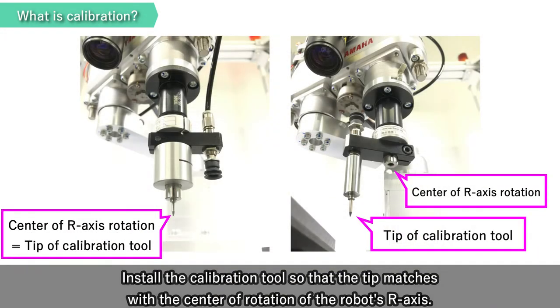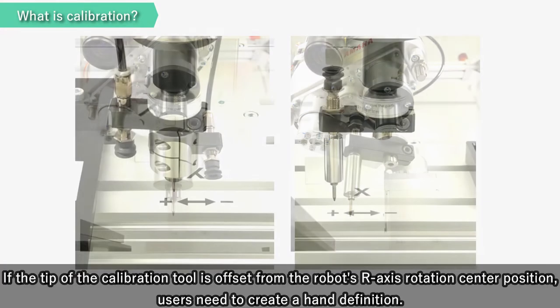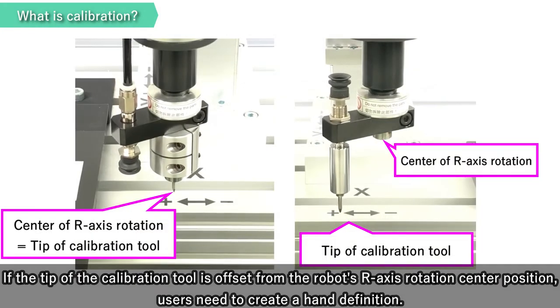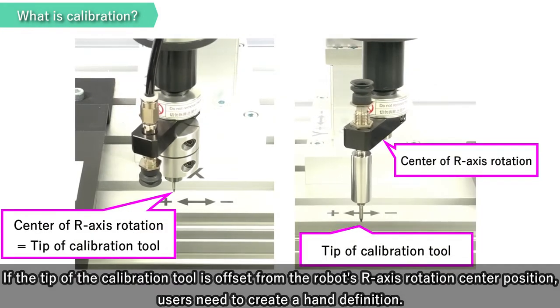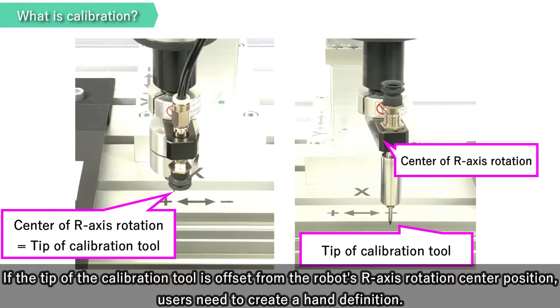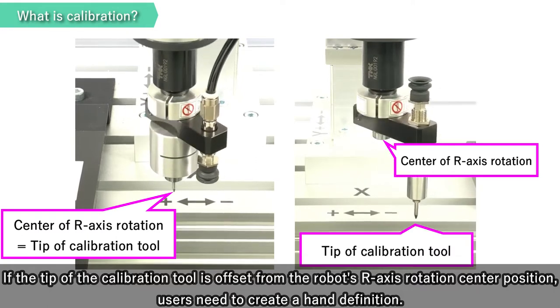Install the calibration tool so that the tip matches with the center of rotation of the robot R-axis. If the tip of the calibration tool is offset from the robot R-axis rotation center position, users need to create a hand definition.